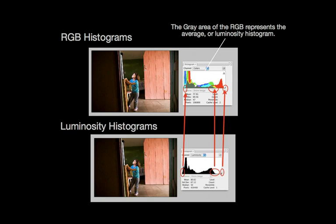The gray area of the RGB histogram on top represents the average or luminosity histogram that you see on the bottom. Now, if you're new to histograms, I'd recommend beginning by setting your camera to the luminosity or average histogram mode.